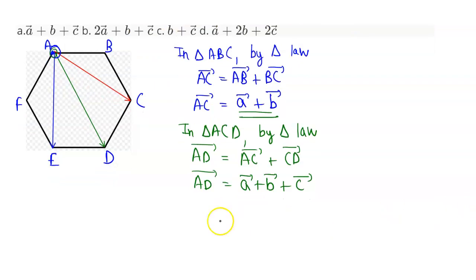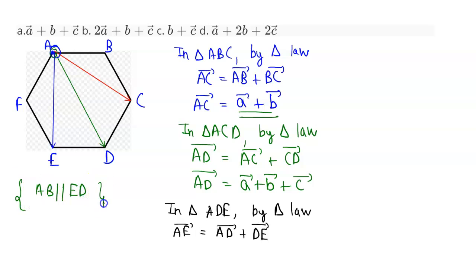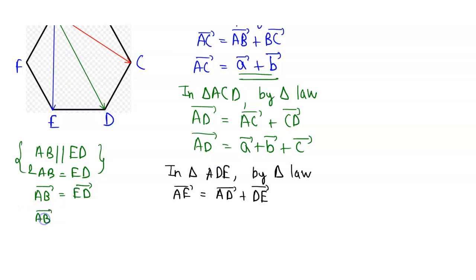In triangle ADE, by the triangular law of vector addition, AE is the resultant vector of AD vector and DE vector. Since this is a regular hexagon, AB is parallel and equal to ED, so AB vector equals ED vector. This also means AB vector equals minus DE vector, as the directions are opposite.